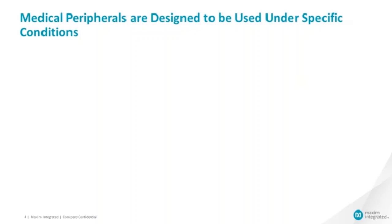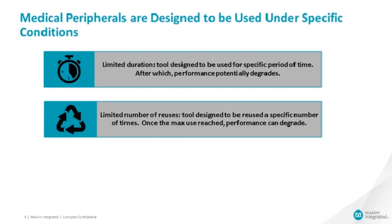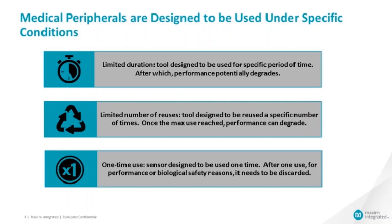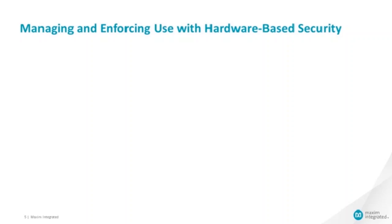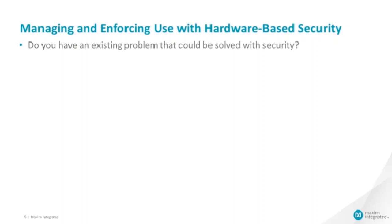Let's think about medical peripherals and how they're designed to be used — under specific use conditions. For example, limited duration: a tool or sensor designed to be used for a specific period of time, after which performance potentially degrades. Or a limited number of reuses — perhaps 10 times, 100 times — once that maximum is reached, performance can degrade. Or one-time-use products, where after use, for either biological safety reasons or performance, it needs to be discarded.